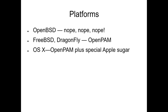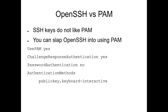FreeBSD, Dragonfly, and OSX also use OpenPAM, though OSX has added their own special Apple sugar. When SSH comes up, SSH keys don't fit into PAM — they have extra information that doesn't fit through the specified PAM interface. What you can do is tell OpenSSH to consult PAM as part of the login, using keyboard-interactive authentication and challenge-response. The password authentication option tells OpenSSH to use its own password checker, not PAM.